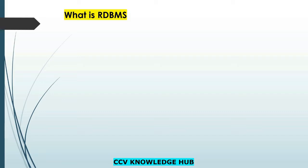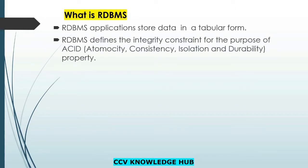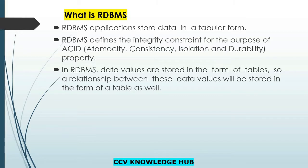Now we will see what is RDBMS and what rules are available for it. As discussed earlier, SQL is RDBMS — Relational Database Management System. RDBMS applications store data in a tabular form. RDBMS defines integrity constraints for the purpose of ACID properties: Atomicity, Consistency, Isolation, and Durability. Data values and relationships are stored in the form of tables.